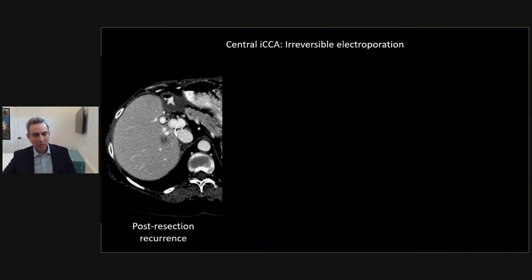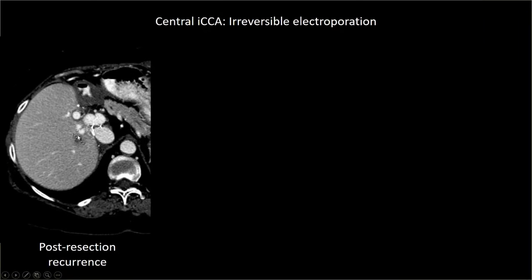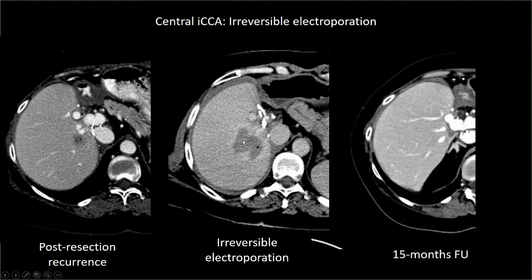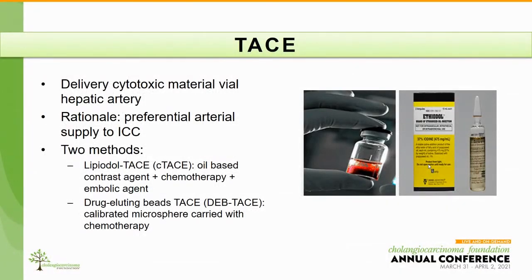This is a particular application of ablation: a patient who had a left hepatectomy and presented with a central recurrence approximately two centimeters, very close to the main bile ducts and main hepatic vessels. We could not safely perform thermal ablation, so we used irreversible electroporation, which is a great application for centrally located lesions. This is the immediate CT scan after irreversible electroporation showing the ablation cavity, and 15 months later showing no local recurrence with some atrophy of the right posterior sector.